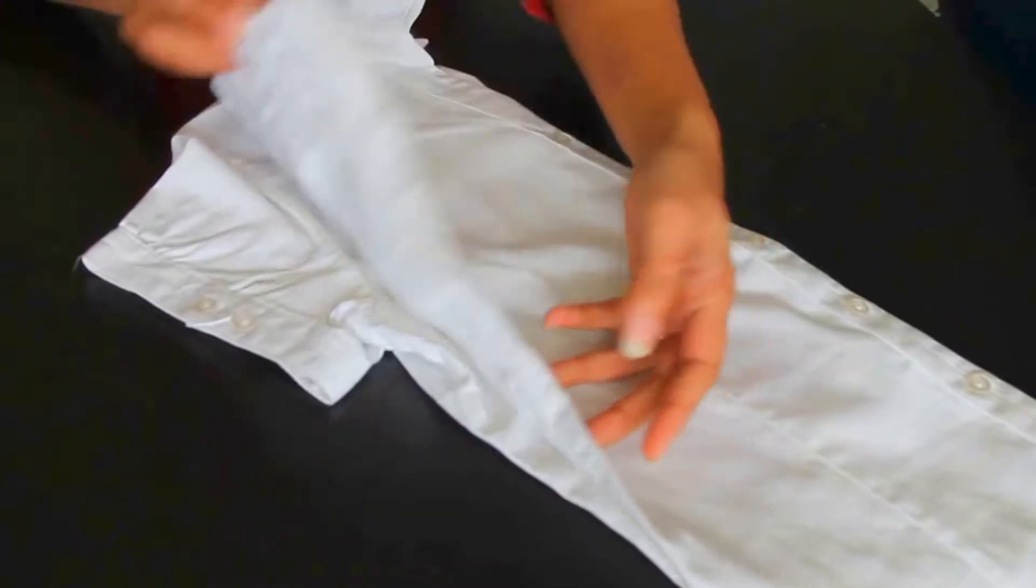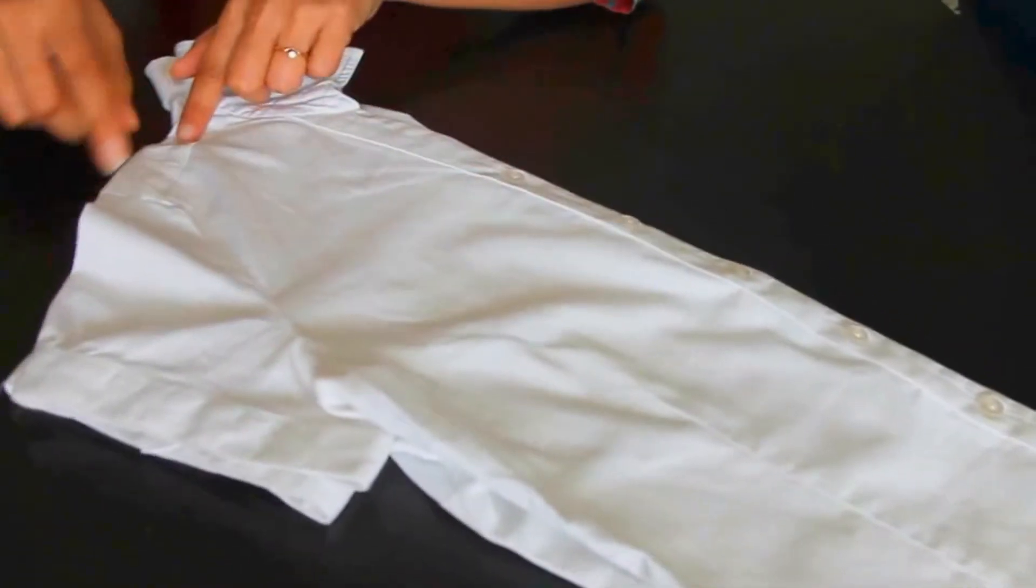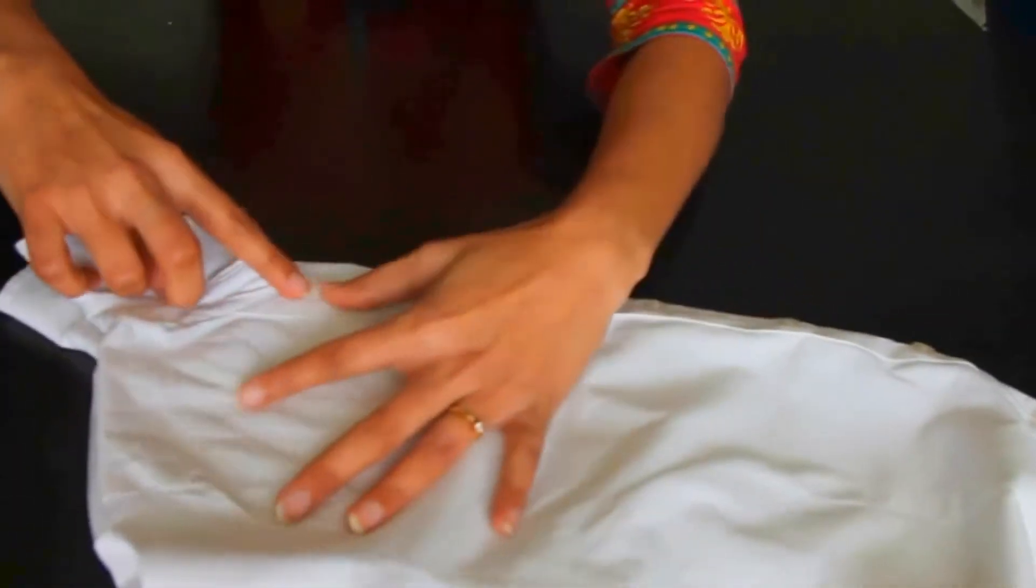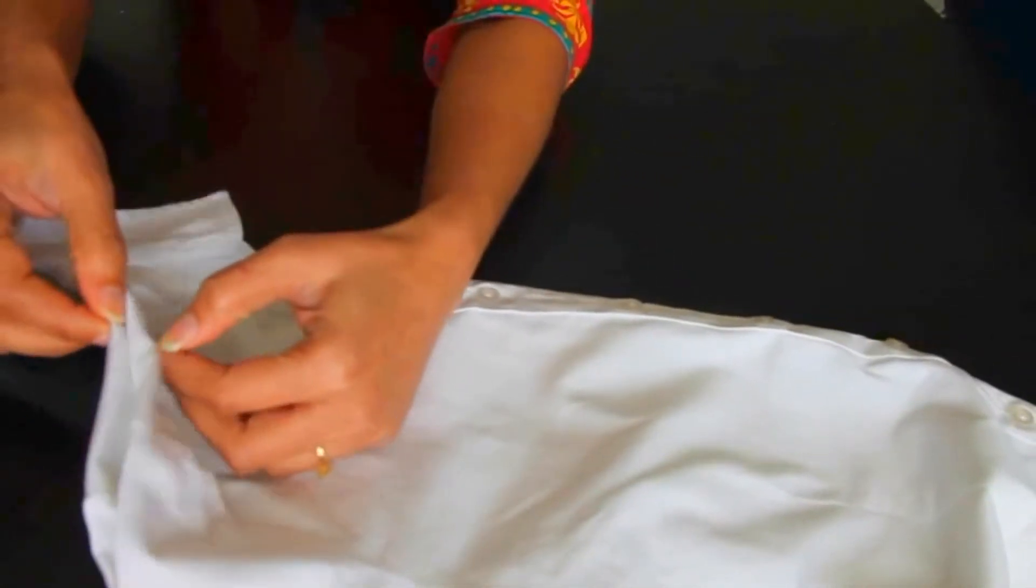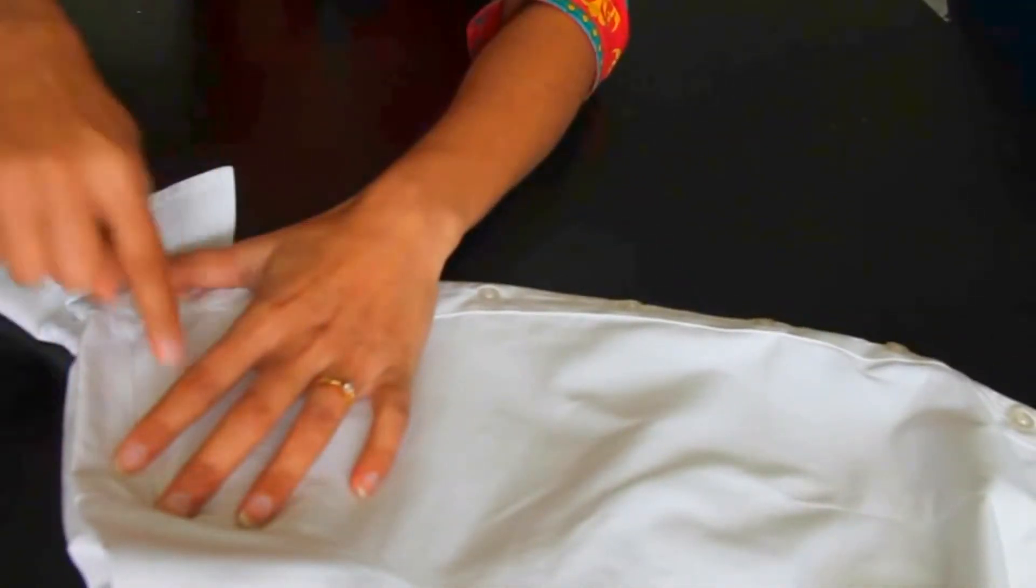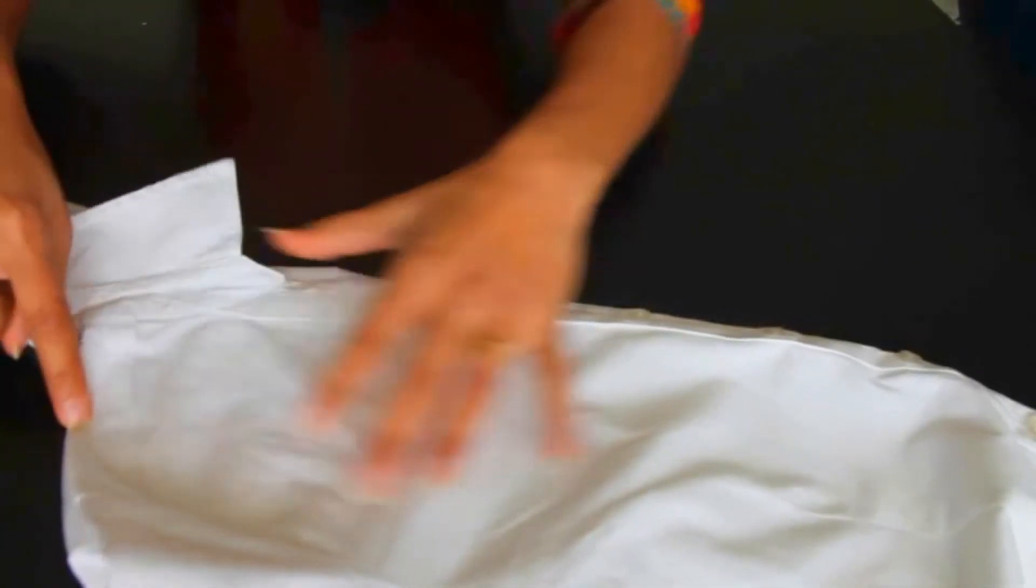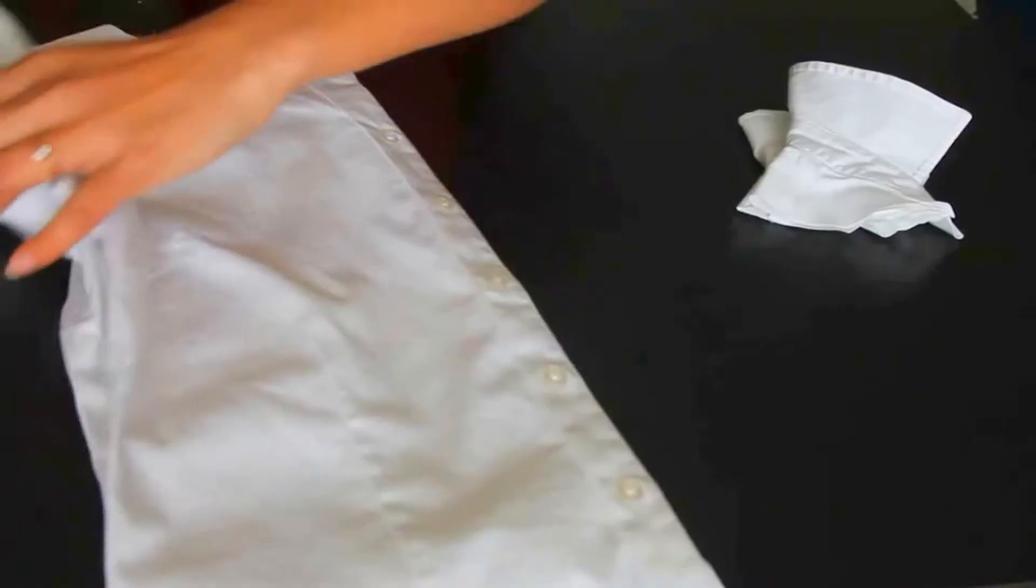So my shirt is folded like this and now I'll be cutting it along these lines. I'll be cutting both the sides together so they get into proper shape. So we have cut it out and here it is, we have a neck.